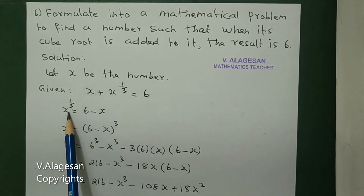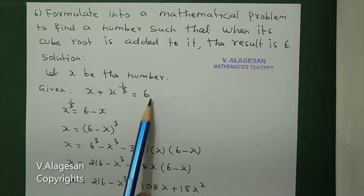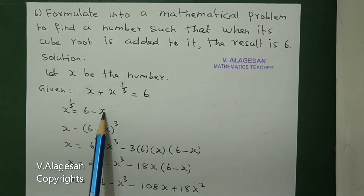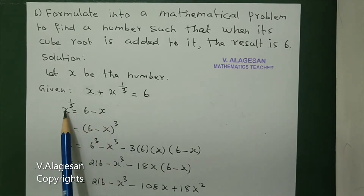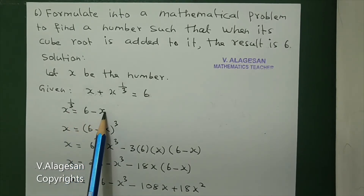Now, x to the power one-third is moved to the left side and x to the right side. So, x to the power one-third is equal to six minus x.